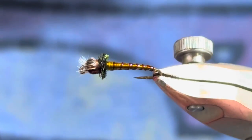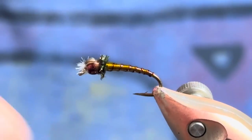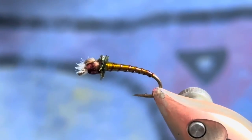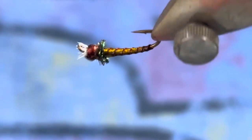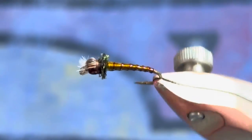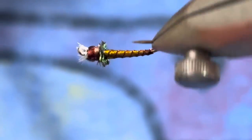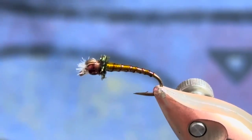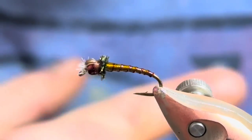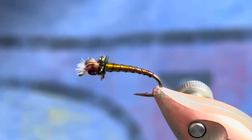And you can nip that out. If you want to throw some glue on your wraps before you put that whip finish in you certainly can, but that is a pretty realistic looking little bug. Not a difficult tie, a little bit clunky up by the head in the beginning, but once you do a few of them you will see that they're not that tough.